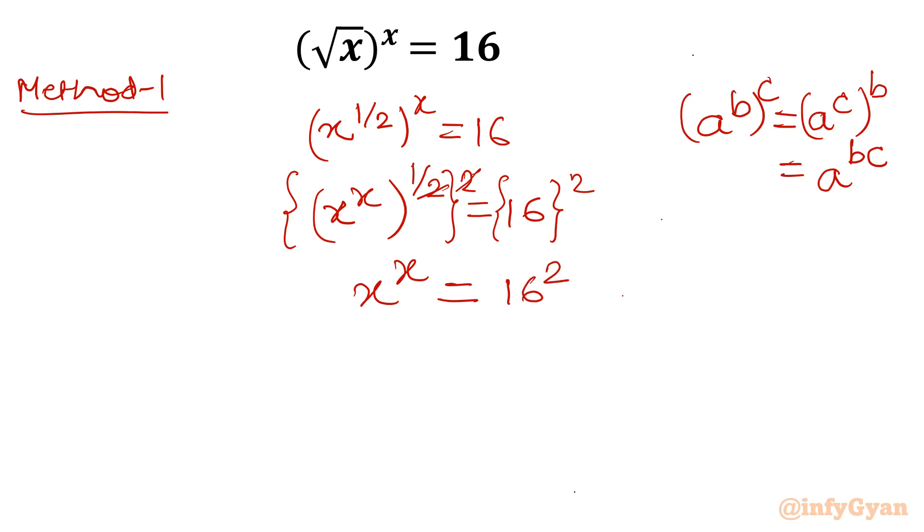Now 16 can be written as 4 power 2. Now again same property. I will take the product in the exponent. I can write 4 power 2 times 2 which will be 4 power 4. So ultimately what we have got is x power x is equal to 4 power 4. Only just by comparing base and exponents we can conclude x must be equal to 4.